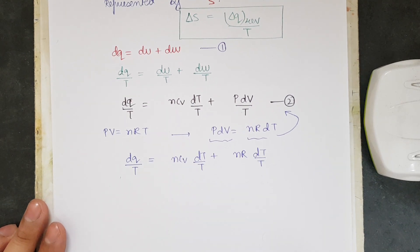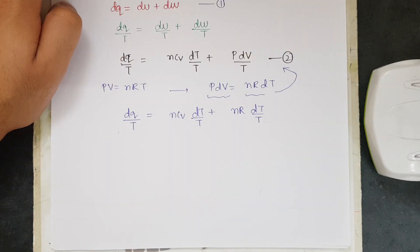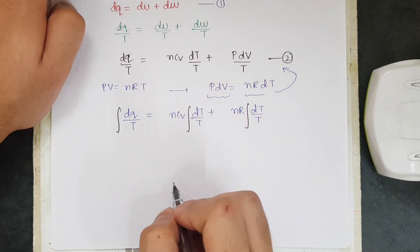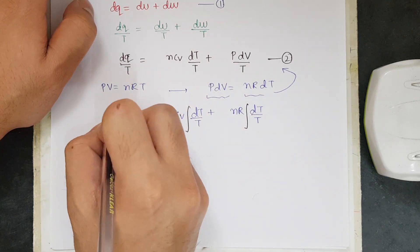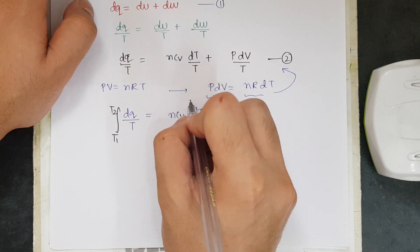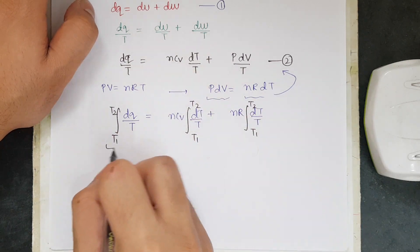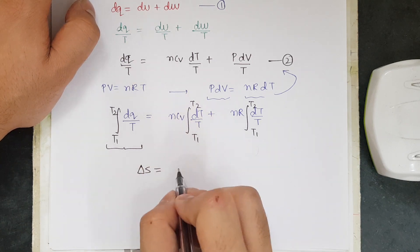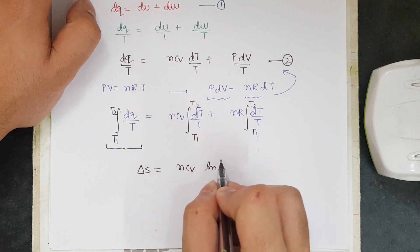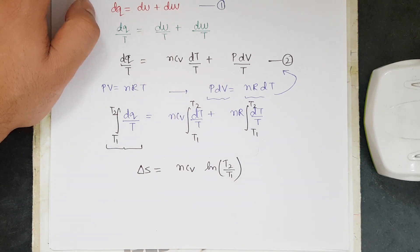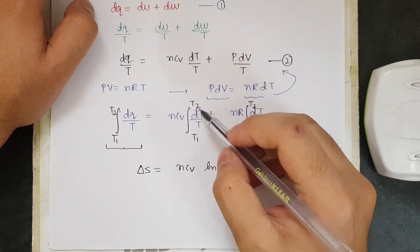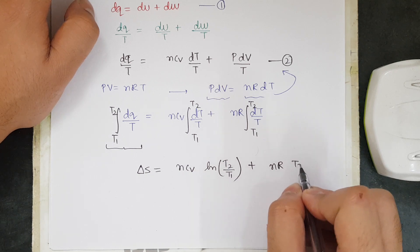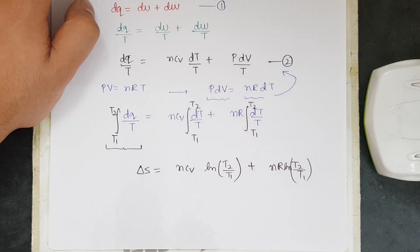Now we shall integrate both sides to get the value of delta S, integrating from T1 to T2. Putting in the limits, we get delta S equal to NCV ln(T2/T1). This can also be written in terms of NRT2/T1 ln(T2/T1), but since both constraints are already in temperature form, we shall modify the equation differently for further use.